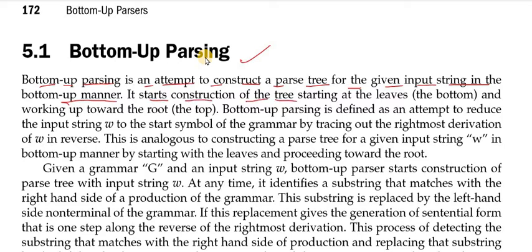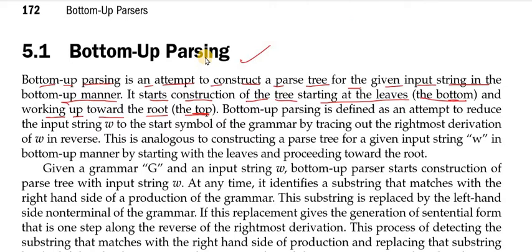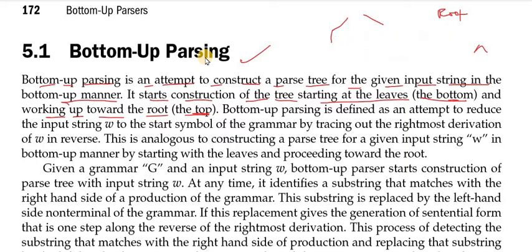It starts construction of trees starting with the leaves at the bottom and working upwards to the root at the top. Basically we have an inverted tree where the root is at the top, and we start building the tree from the bottom going upward. Bottom up parsing is defined as an attempt to reduce the input string omega to the start symbol of the grammar.